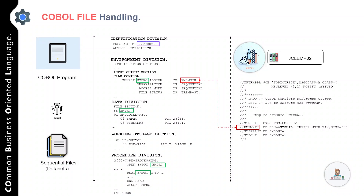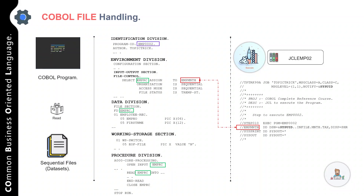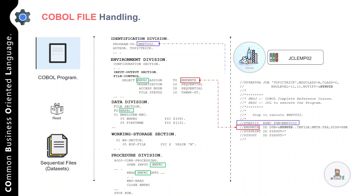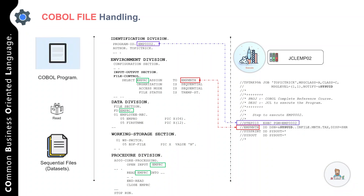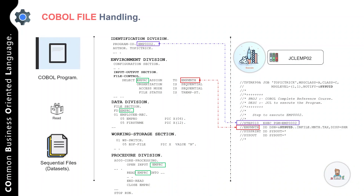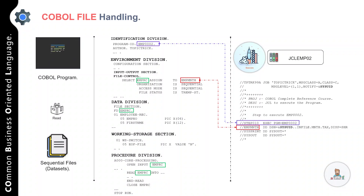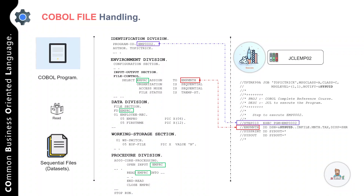To open a file we use the OPEN statement, then to read data from the file we use a READ statement, and finally we use the CLOSE statement to close the file that was opened. The last statement is STOP RUN, which will terminate the processing of the COBOL program.